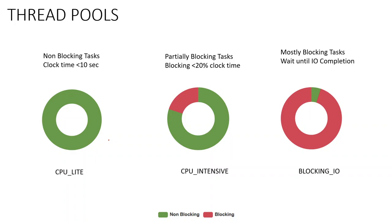Mule 4 has three main thread pools — there are five in total but let's focus on the main three, each backed by its own scheduler. Thread pool usage is linked to the message processor. The first is the CPU Light thread pool, used only for non-blocking tasks — tasks that do not block the thread and complete quickly, consuming less than 10 milliseconds of CPU clock time.